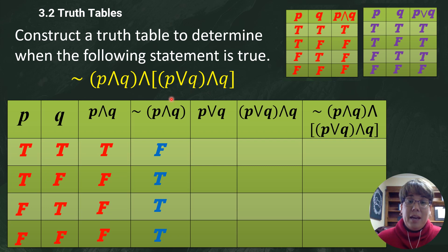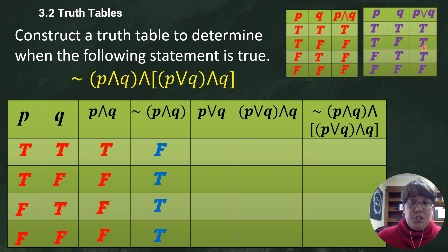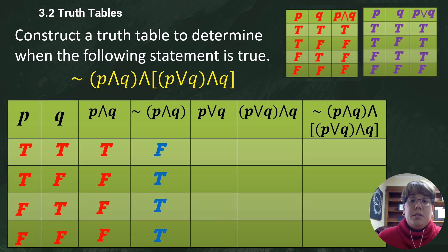We have gotten our not(p AND q), so that's all of this. Now we have to start working inside the next set of parentheses. The first thing is p OR q, so I'm going to go over to my p OR q chart. p OR q is only false when everything is false; every other time it's true. Just copy those values down into this column.